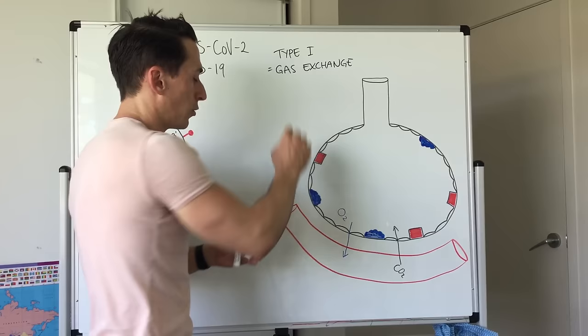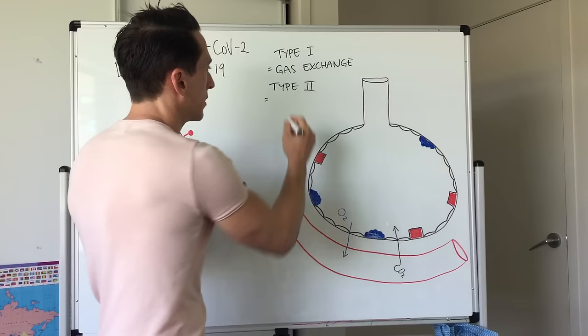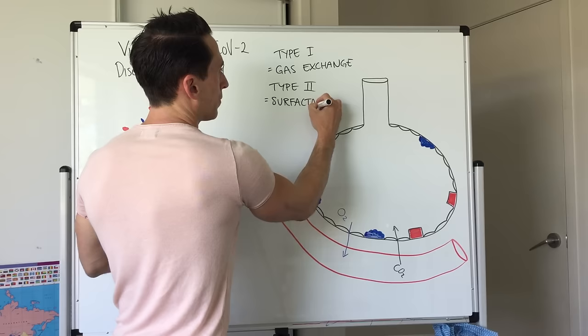The second type of cell, the type 2 cell, which are these cuboidal looking cells, they actually produce something called surfactant. Now what surfactant does is it's like a detergent. Now I want you to think about this.